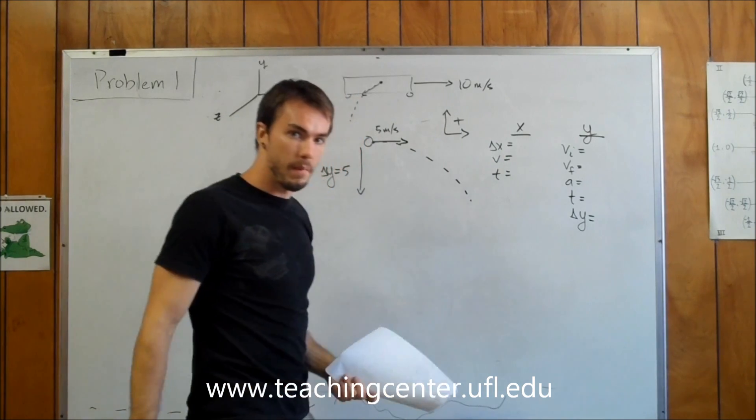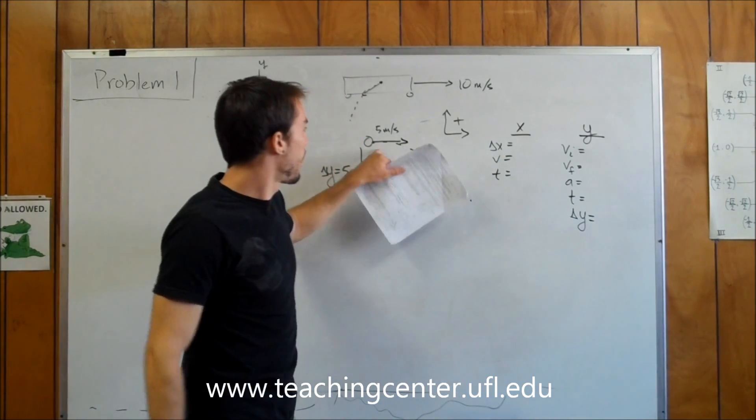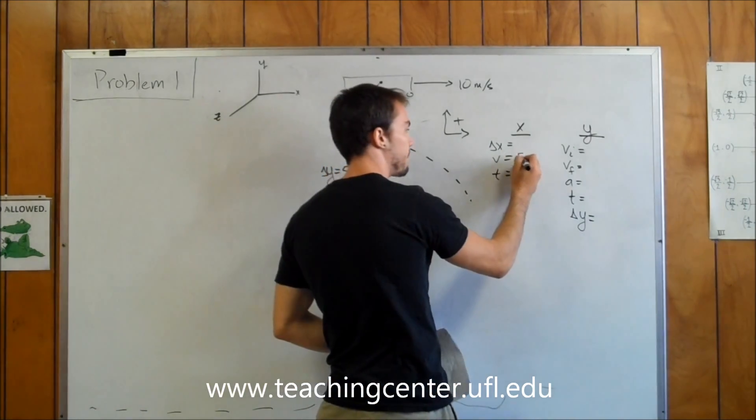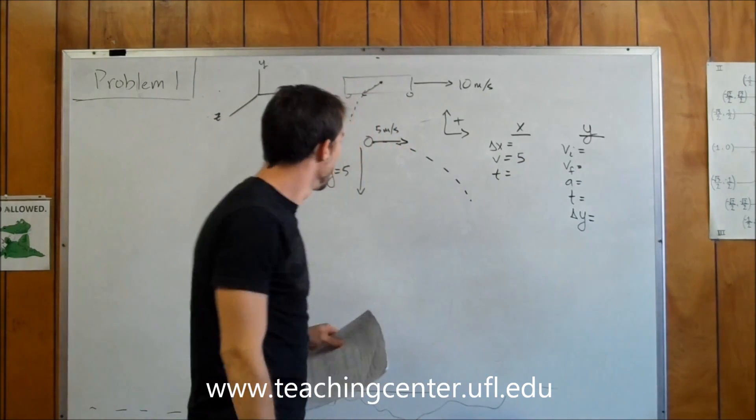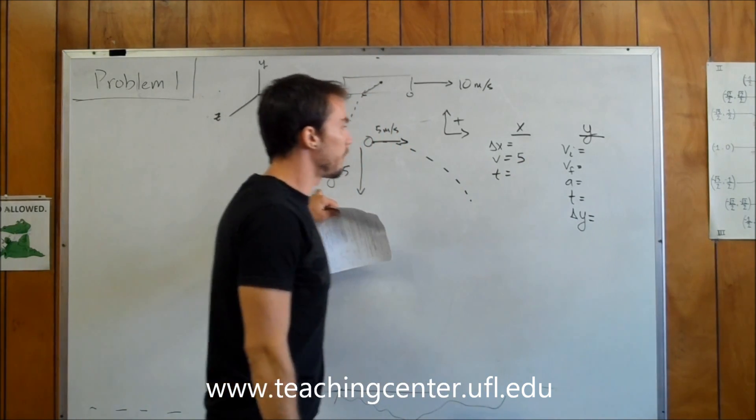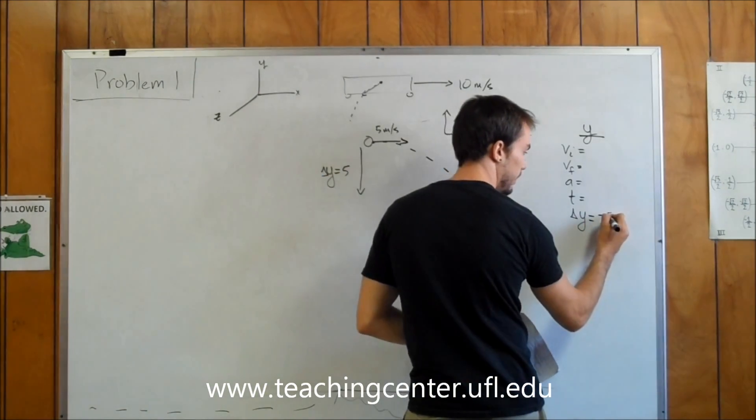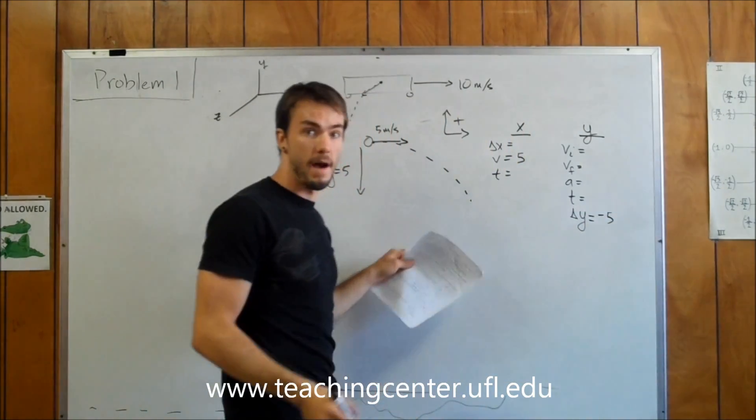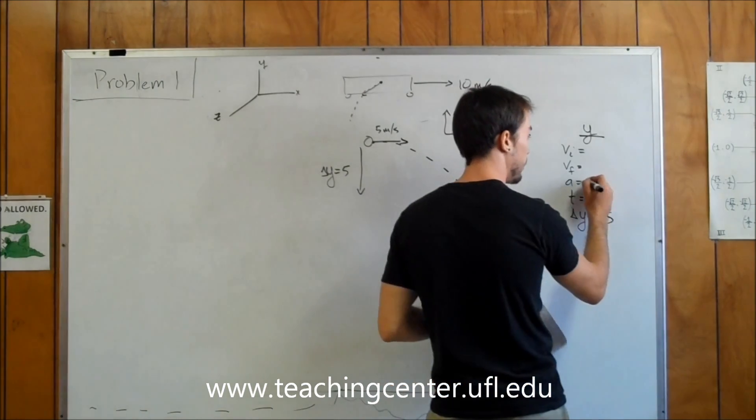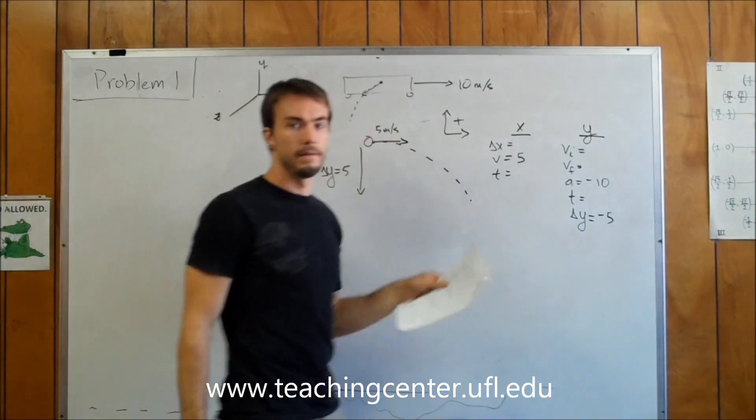Now make sure you always set a frame of reference. I'm going to call up and to the right positive. Therefore, we know the velocity in the X direction is 5 meters per second. We know the delta Y is downwards, therefore negative 5.